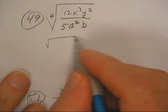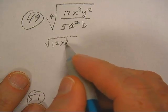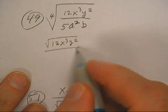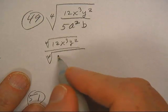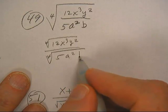All righty then, this is really like 12x³y² over, that's the fourth root, the fourth root of 5a²b.